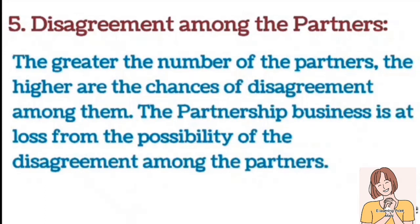نمبر 5 پر شراکتداروں کے درمیان اختلاف — شراکتداروں کی تعداد جتنی زیادہ ہوگی ان کے درمیان اختلاف کے امکانات بھی اتنے زیادہ ہوں گے۔ شراکتداری کا کاروبار اختلاف کے امکان سے نقصان میں رہتا ہے۔ Partnership کافی risk پر ہوتی ہے کیونکہ partners کے لیے اختلاف کے بہت سارے امکانات ہوتے ہیں اور یہ اس کا major disadvantage ہے۔